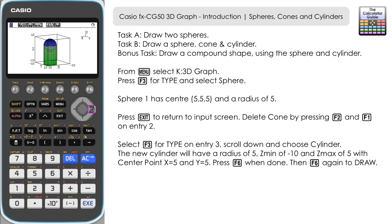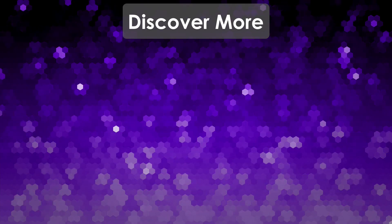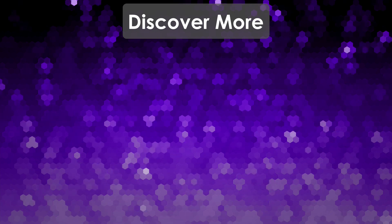That's an introduction to the 3D graph mode on the FX-CG 50. It is very much a visualization tool — to visualize what these graphs may look like and their relative positions, since sometimes when you just have equations written on a page it can be tricky to imagine how they appear. This is a very useful mode to show the size and position of graphs. Don't forget to like and subscribe for future videos — thank you very much for watching.